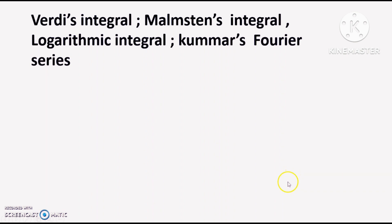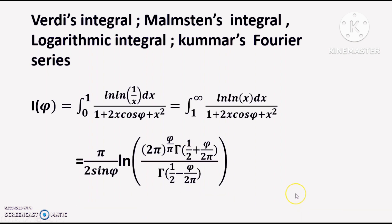In Gradshteyn and Ryzhik's tables of integrals, Blagochin discovered that this integral was evaluated by Malmstein and published already in the middle of the 19th century. So this is called the Malmstein integral. Blagochin's paper shows that this integral can be deduced from more general integral evaluations.